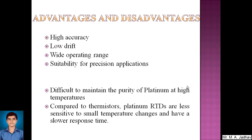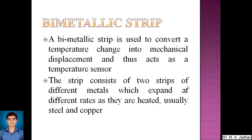Advantages of RTDs: they are highly accurate, have low drift, have a wide operating range, and are suitable for precision applications. The main disadvantage is that it is difficult to maintain the purity of platinum at high temperatures. Additionally, compared to thermistors, platinum RTDs are less sensitive to small temperature changes — thermistors can measure temperature changes as small as 10 K, whereas RTDs have less sensitivity and a slower response time for small changes.